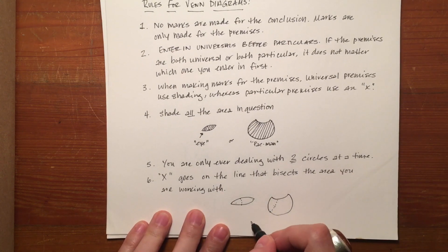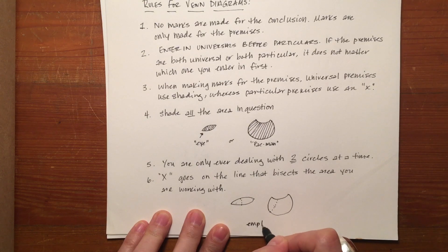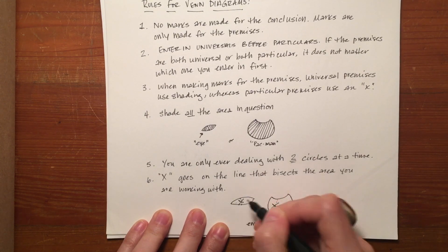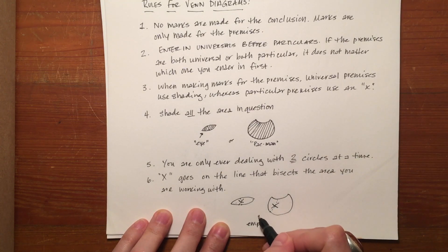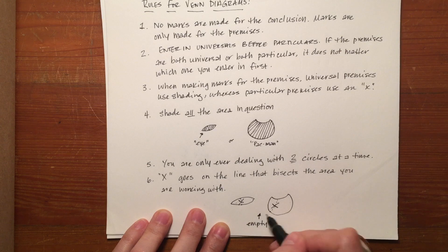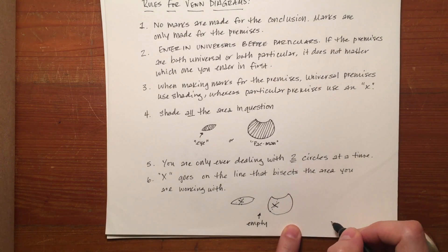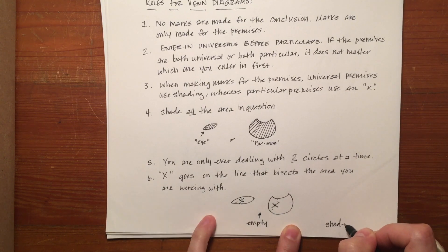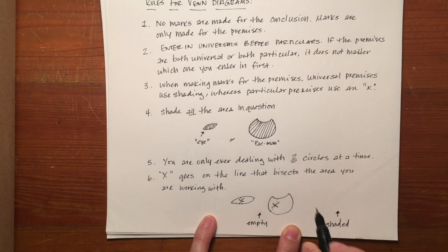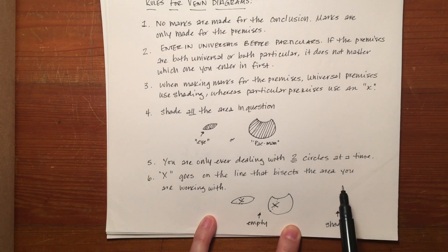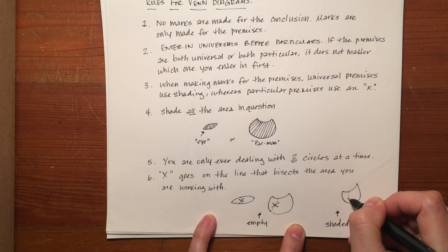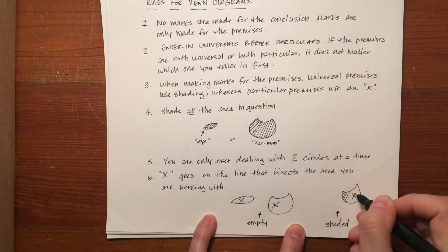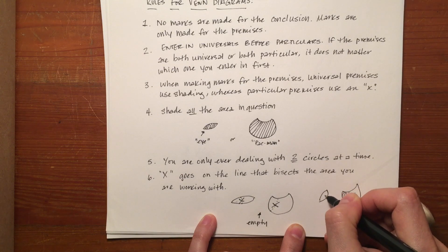So again, if it's empty, then you put the X on that line from the third circle that bisects it, to show that we don't know which side it's in. If it's shaded, which is why we put universal premises in first, because universal premises use shading and particular ones use an X, if it was shaded already in one part, then you put the X in the empty spot.